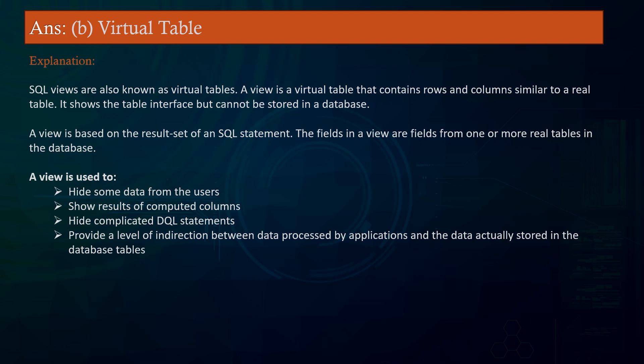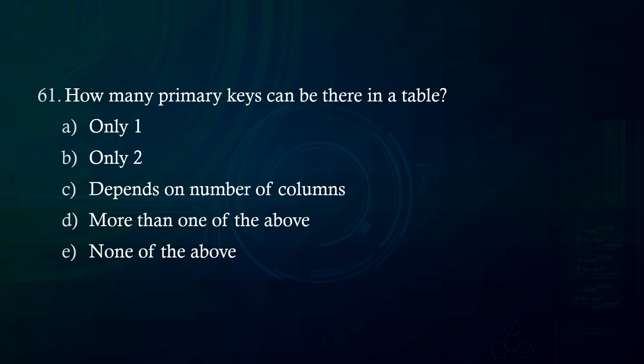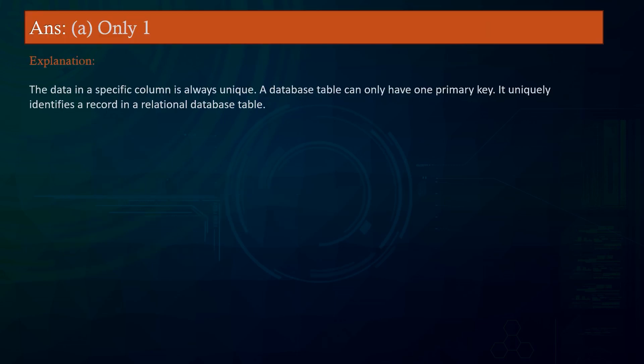How many primary keys can there be in a table? A. Only one B. Only two C. Depends on number of columns D. More than one of the above E. None of the above. Answer: Only one. Explanation: The data in a specific column is always unique. A database table can only have one primary key, which uniquely identifies a record in a relational database table.